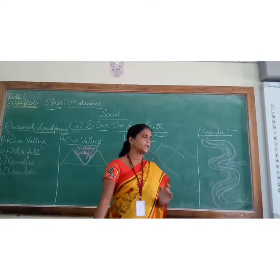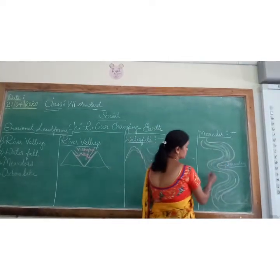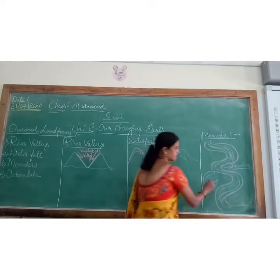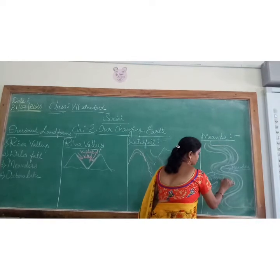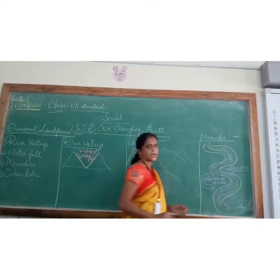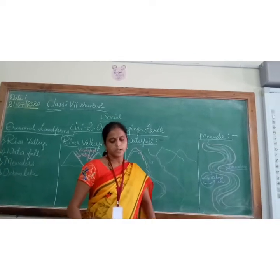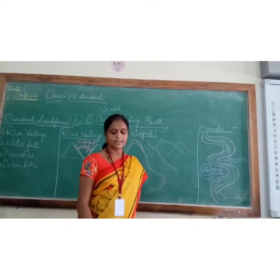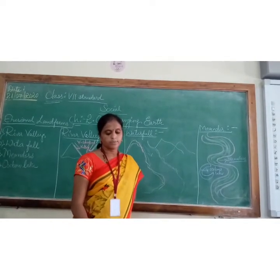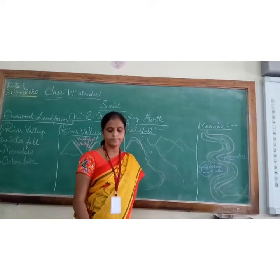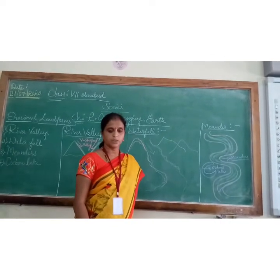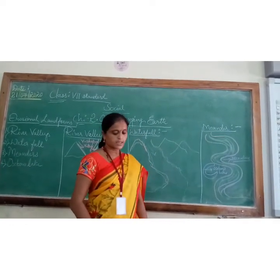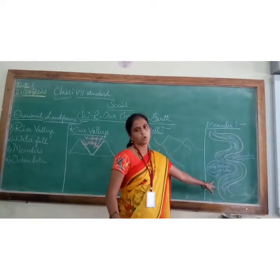Next we will study about Oxbow Lakes. When the river flows, it can cut off from the main stream, taking a curved shape in the plain areas — these are called oxbow lakes. Due to continuous erosion and deposition along the sides of a meander, the ends of the meander loop come closer and closer. In due course of time, the meander loop is cut off from the main river, forming a cut-off lake called an oxbow lake.